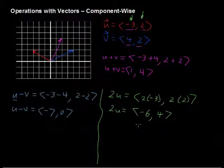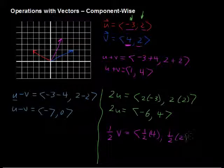We could go one half as well. Let's take a look at one half v. That equals one half of the 4 component and one half of the 2 component. So one half v equals <2, 1>.